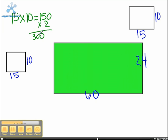Then you take the big rectangle, 60 times 24, to equal 1,440.